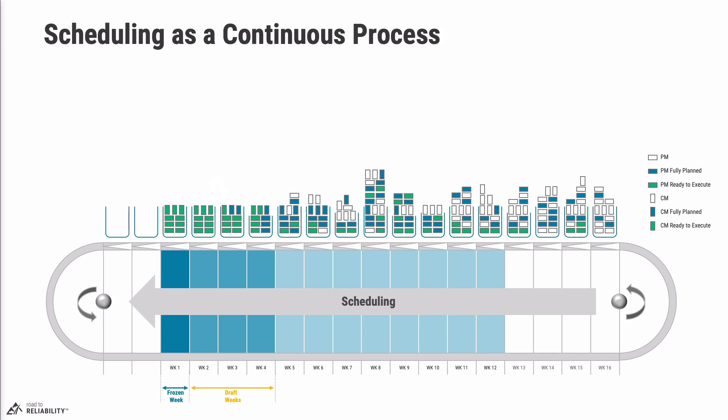It is also key for your maintenance supervisor to advise the scheduler of any capacity changes so that the size of the bucket is adjusted. If that is always done at the last moment, it creates a lot of rework for the scheduler, and that rework will result in the scheduler having less time to put together a solid draft schedule for future weeks.